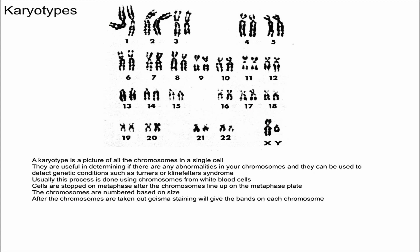Now you might be curious as to how this is done. It's important to remember that usually chromosomes exist in chromatin form — they essentially look like spaghetti in the nucleus. You might wonder how they get it in a condensed form like this and take a picture of it. What happens is they halt the cell at metaphase. During metaphase, all of the chromosomes line up on the metaphase plate and are already condensed from prophase, so they'll already look like this.